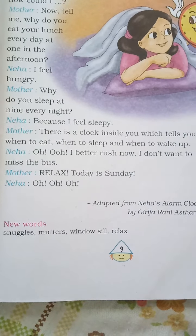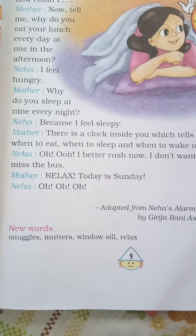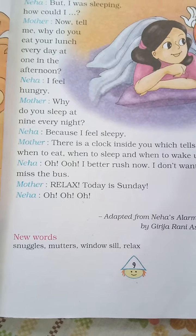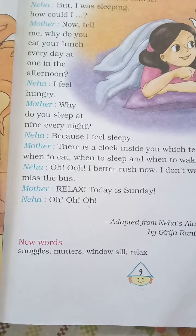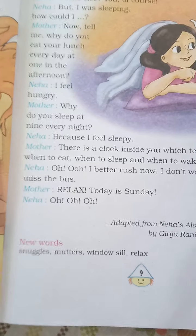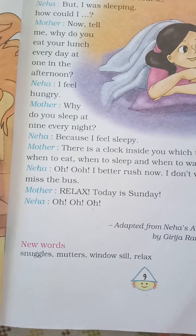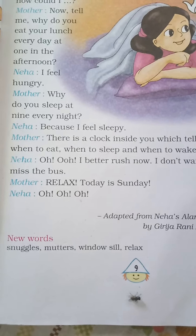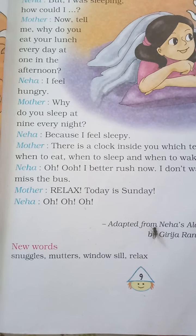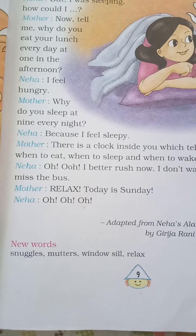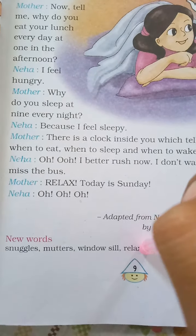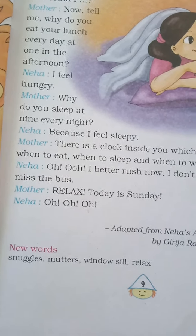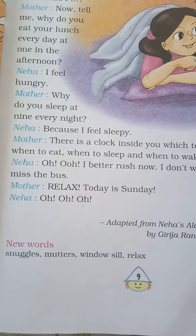New words. First: Snuggles — means when we feel comfortable. Second: Mutters — means when we speak in a low, quiet and often angry voice that is difficult to hear. Third: Window sill — the narrow shelf at the bottom of a window, either inside or outside. And: Relax — to rest while you are doing something enjoyable, especially after work or effort.